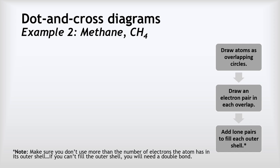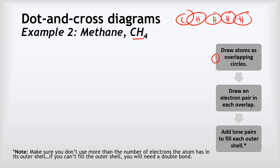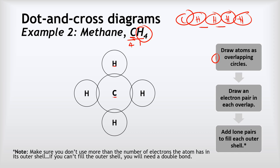Example two is a bit more complicated — we're going to look at how to draw this for methane. The difficulty is in step one: how do we arrange the atoms? Hydrogen can only ever have one bond, so it couldn't join to things on both sides. Whereas carbon can form four bonds because it's got four electrons in its outer shell and needs four more. A good rule of thumb is that hydrogens go around the edges and whatever else goes in the middle — so we've got carbon in the middle and our four hydrogens around the edge.